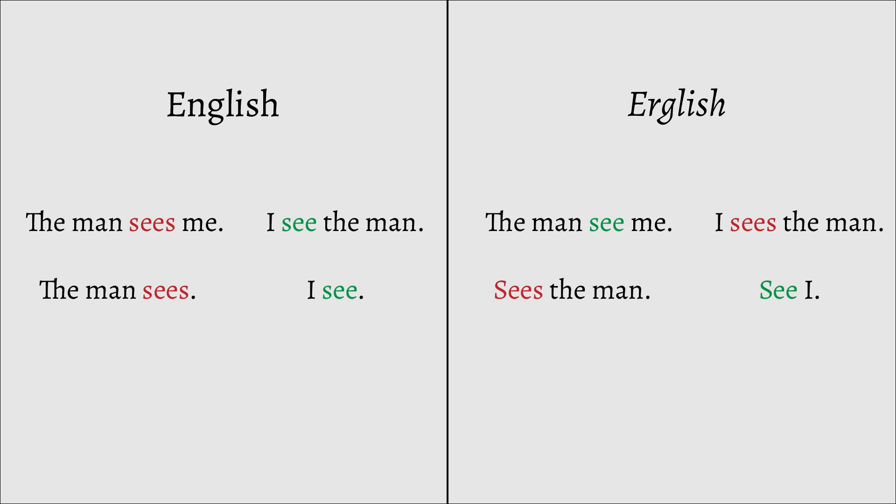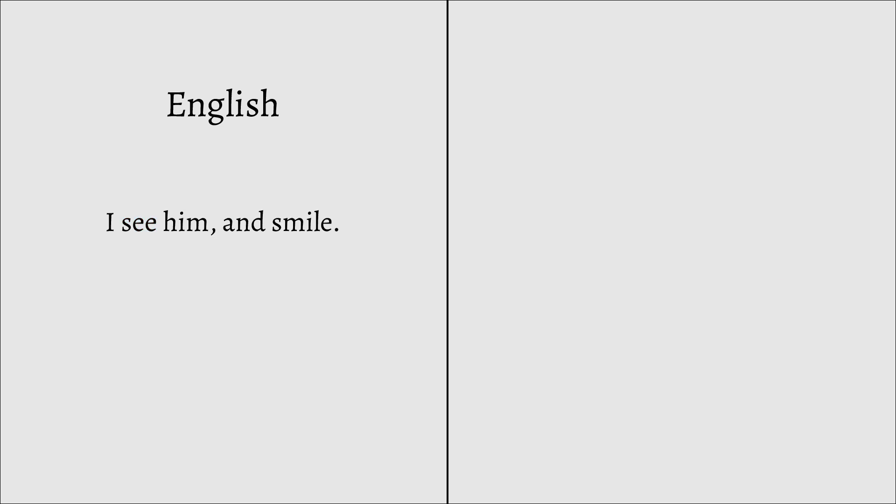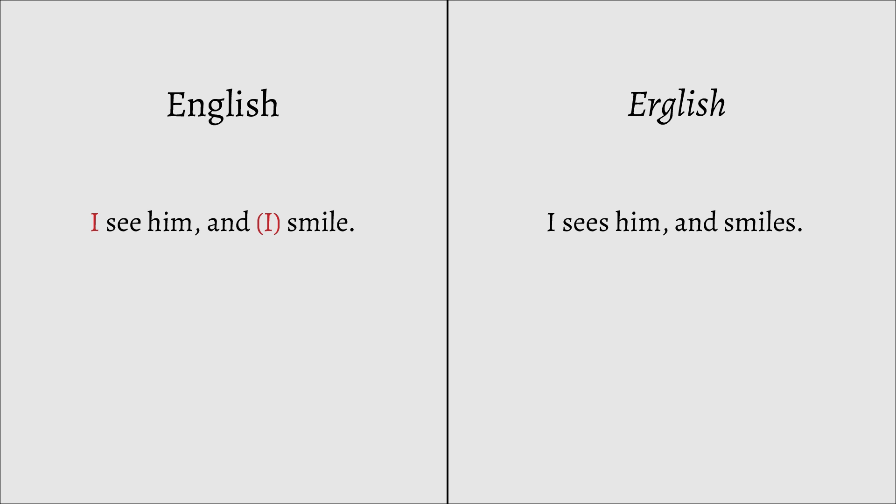In this way, the sole is marked the same way as the patient, and both cause agreement on the verb. Now things up to this point should still be fairly simple to comprehend. Where things get trickier is when we talk about coordination. A great example of this is I see him and smile. Here, the subject of the second verb is implied to be the same as that of the first verb. In the ergative sentence, it would be I sees him and smiles. The subject of the second verb is implied to be the object of the first.